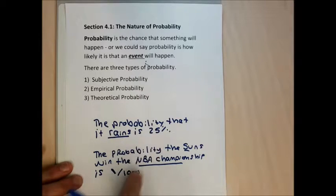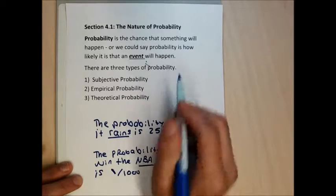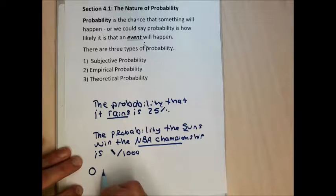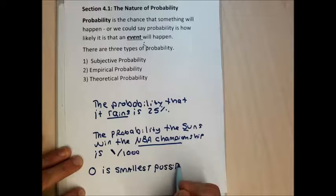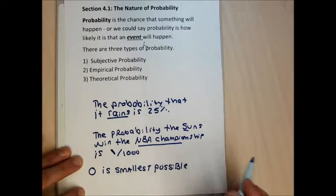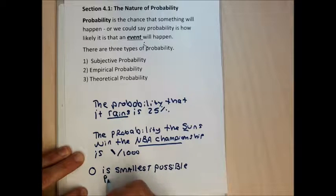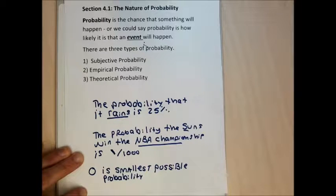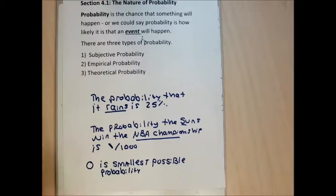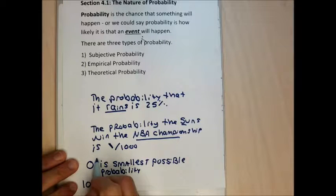Regardless of whether we're using percents or fractions, the lowest possible probability is zero. Zero is the smallest possible probability. If there's a zero percent chance it's going to rain, that means it just can't happen — it's guaranteed not to rain, it's impossible. We can't have negative probabilities. Zero is the smallest probability, and a hundred percent is the largest possible probability.